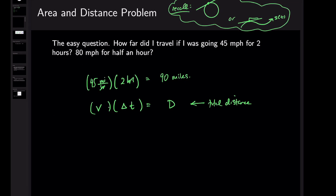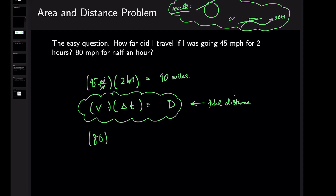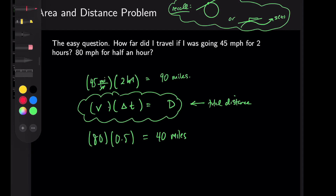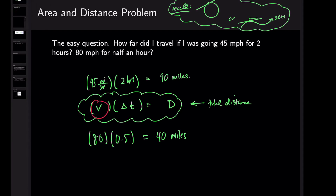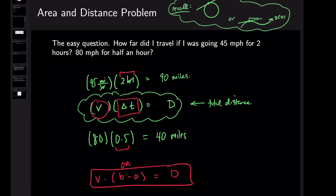This will highlight the whole lecture. If we were going 80 miles an hour for half an hour, this would be 80 times 0.5, leaving us with 40 miles. There are two things happening: we've got the velocity, which is constant in these two cases, and we've got this change in time — this window of time. So V times (B minus A) equals D, from T equals A to T equals B.